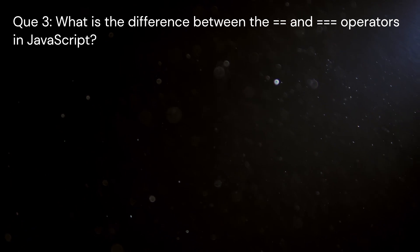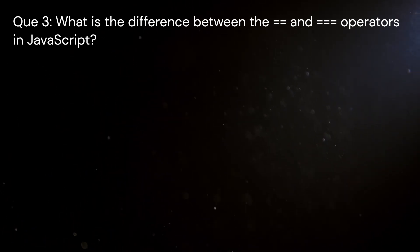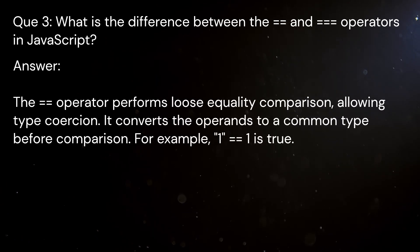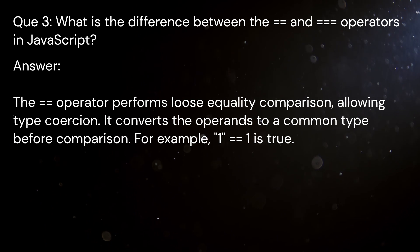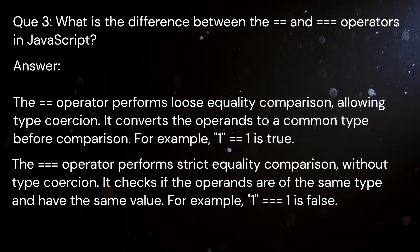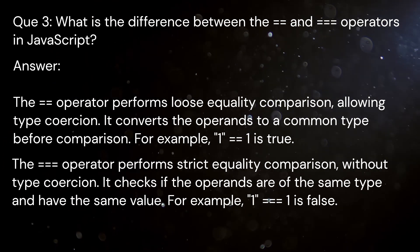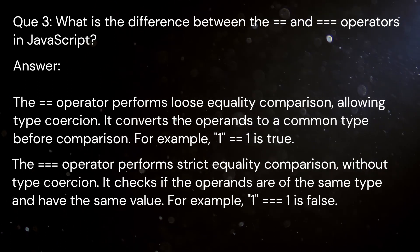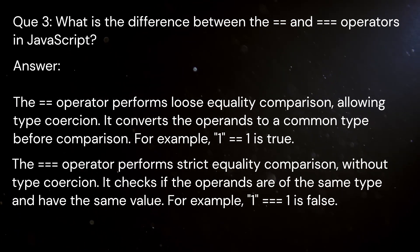Question 3: What is the difference between the == and === operators in JavaScript? Answer: The == operator performs loose equality comparison, allowing type coercion — it converts the operands to a common type before comparison. For example, 1 == '1' is true. The === operator performs strict equality comparison without type coercion; it checks if the operands are of the same type and have the same value. For example, 1 === '1' is false.